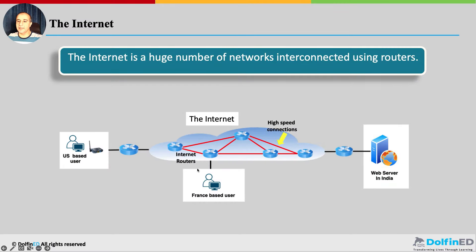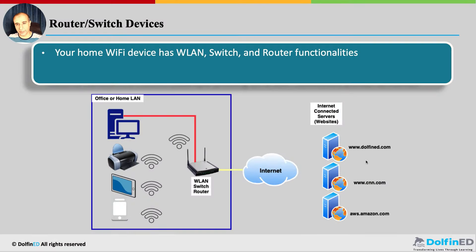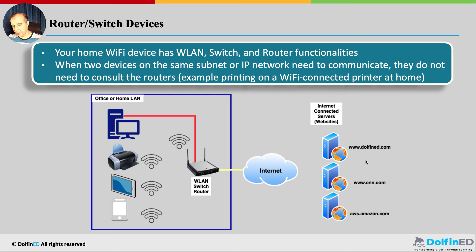The internet is nothing more than a huge number of routers interconnected with high-speed connections. A user in the US can talk to a web server in India in a fraction of a second with a good connection. Devices like the home Wi-Fi router can do both routing and switching. By now you should understand what a subnet, subnet mask, IP address, LAN, switching, and routing are — you're ready for your next steps into cloud, DevOps, and beyond.